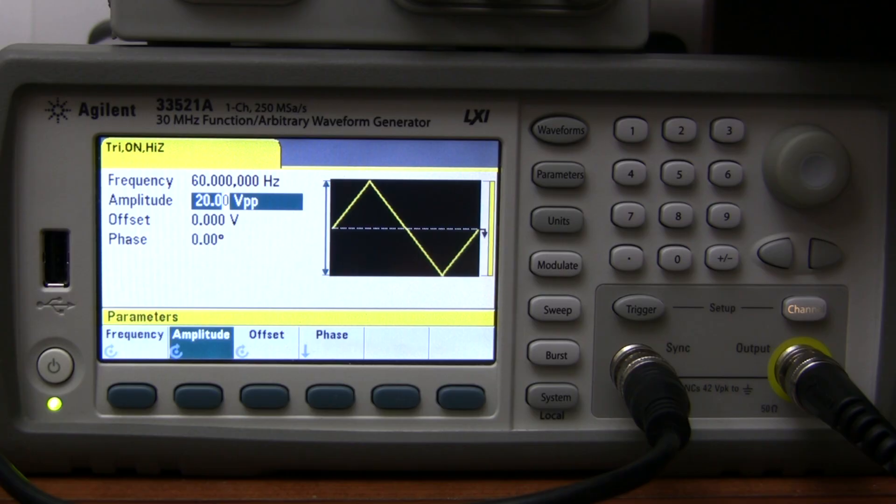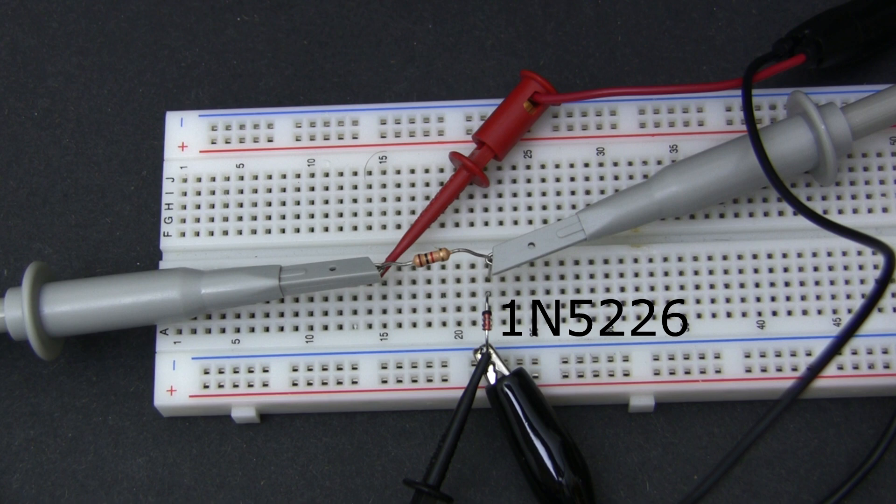Let's see how it works in real life. I'm using my wave generator here to generate a triangle waveform that goes from minus 10 volts to plus 10 volts. For this example, the frequency doesn't matter. On the breadboard, I have a 1K resistor and a 1N5226 3.3 volt Zener diode. I'm feeding in the minus 10 volt to plus 10 volt wave, and I'm measuring the clamped output on my oscilloscope.